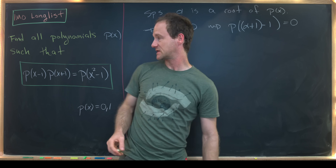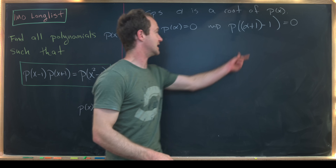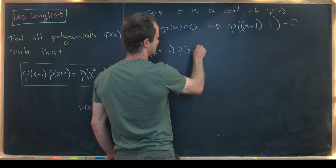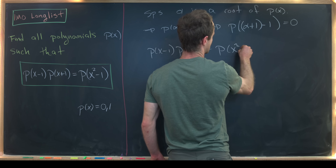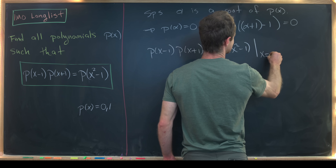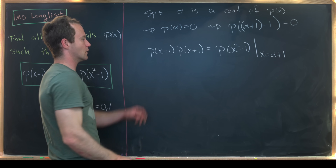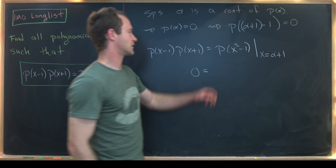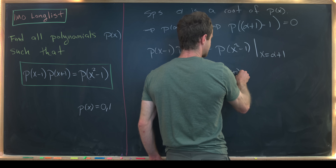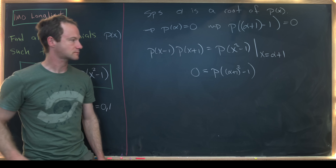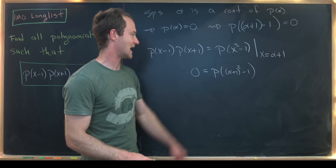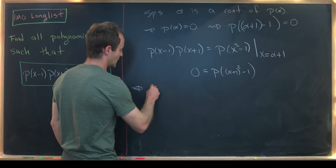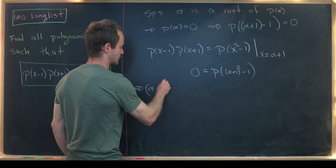We take our functional equation p(x-1)·p(x+1) = p(x²-1) and evaluate it at x = α+1. The left-hand side gives 0, and the right-hand side gives p((α+1)²-1) = 0. So (α+1)²-1 is also a root — starting from root α, we generate a new root (α+1)²-1.